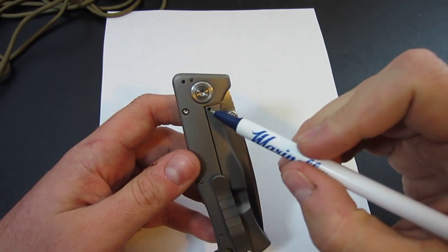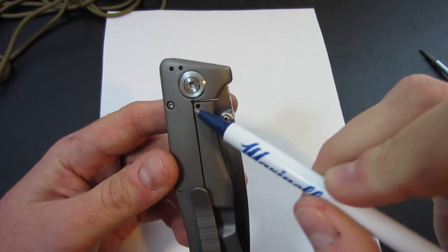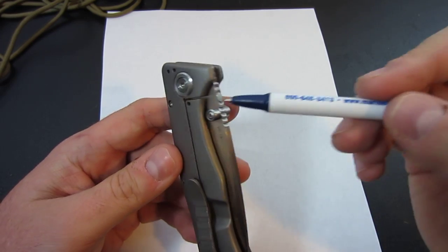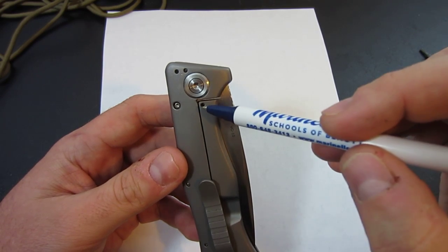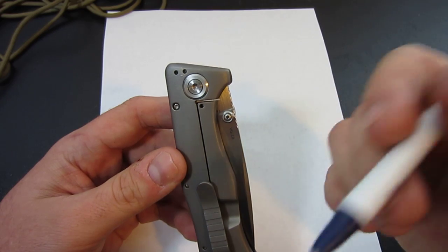Basically, a detent is you have, see this hole right here? It's not always a hole that goes all the way through. Sometimes it's just a pocket. It does the same thing. It creates a hole on the inside of this lock bar. There is a ball bearing pressed into it. Sometimes it's steel. Sometimes it's ceramic.